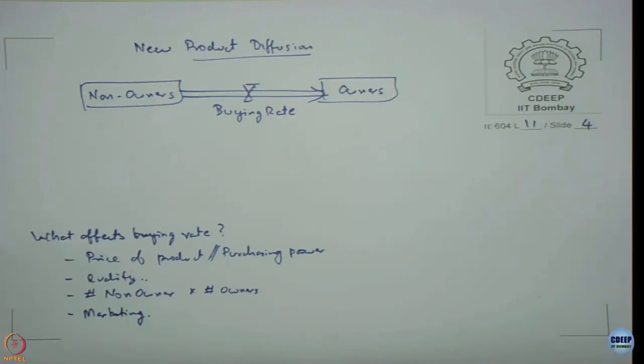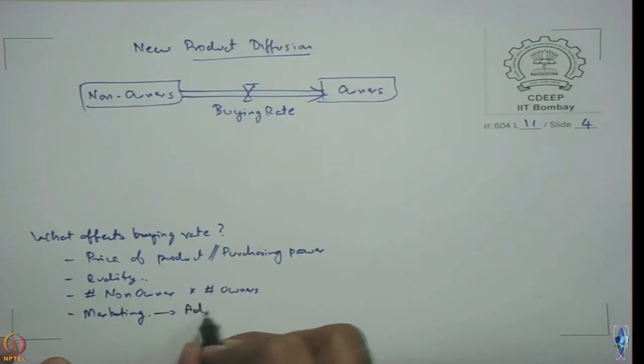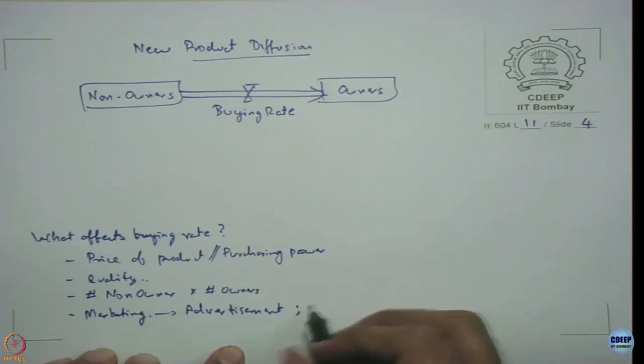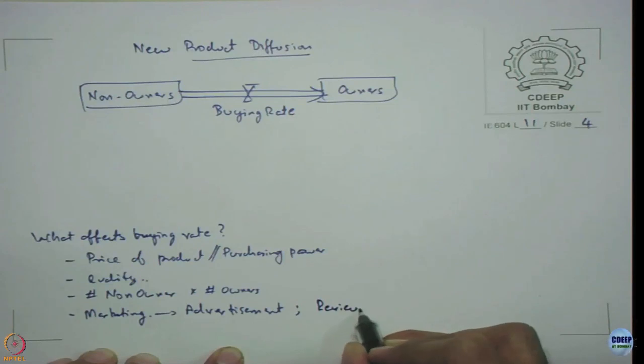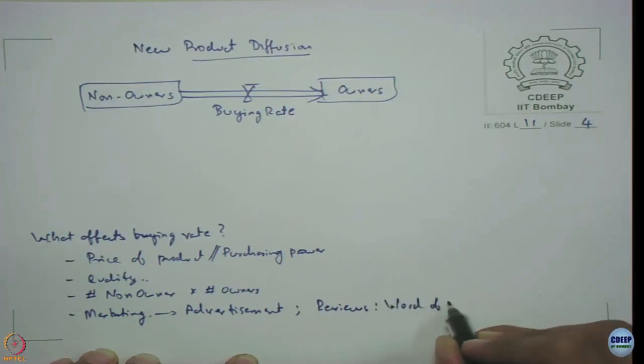There are two types of marketing right, one is advertisement, the other is through reviews, reviews advertisement, other is reviews which part we are going to use the phrase called word of mouth.